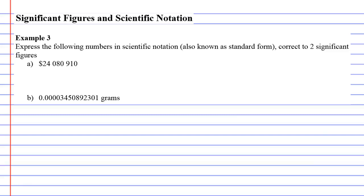Alright, we're going to do example three, which is actually combining scientific notation with significant figures. We'll just read it. It says express the following numbers in scientific notation. By the way, this is also known as standard form. So quite often questions will say put it in standard form, which just means scientific notation.